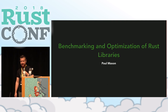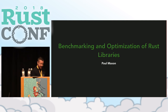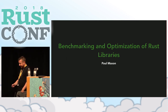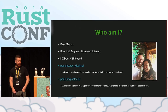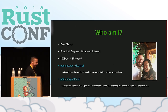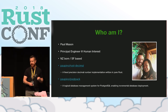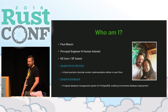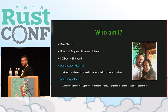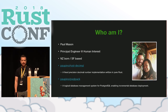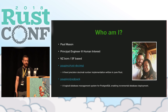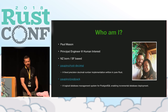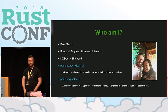I'm Paul, talking about benchmarking optimization of Rust libraries. I'm currently principal engineer at Human Interest, a 401k processing company in San Francisco. I've been working on Rust for a number of years, and as a result, had to create a number of libraries. One such library I'll be discussing is the Rust Decimal Library, which is a fixed precision decimal number library written in Rust.